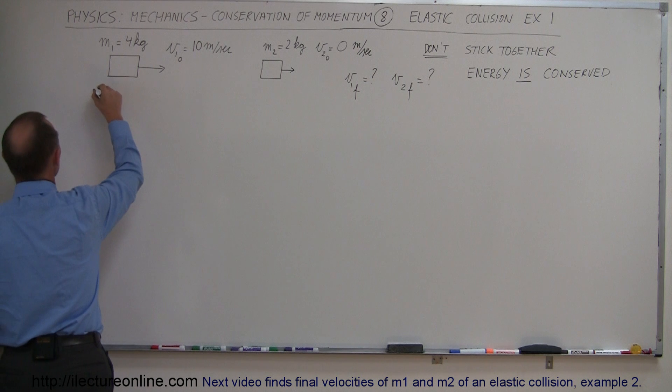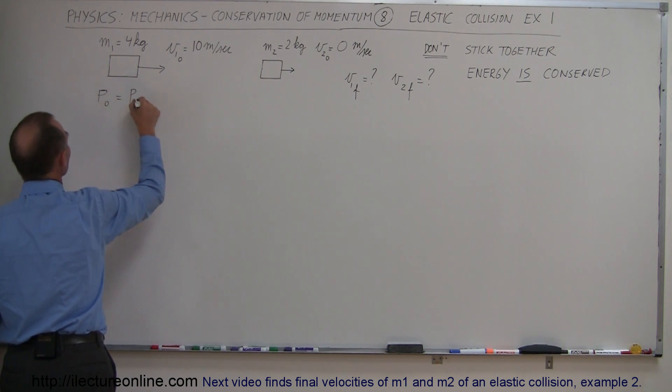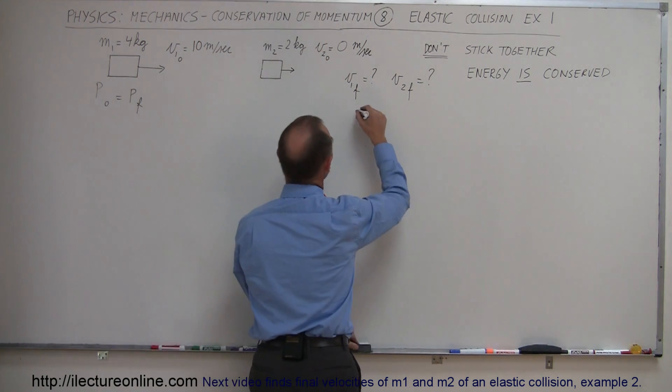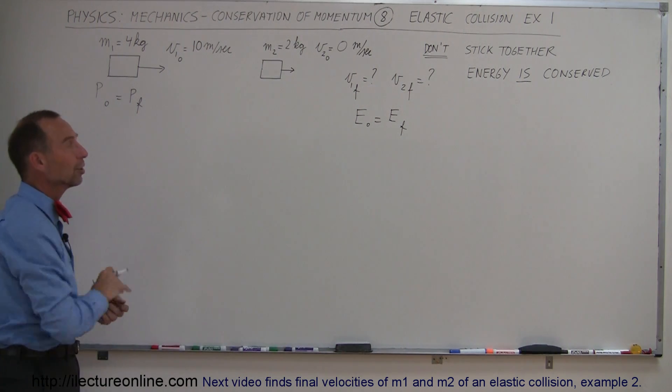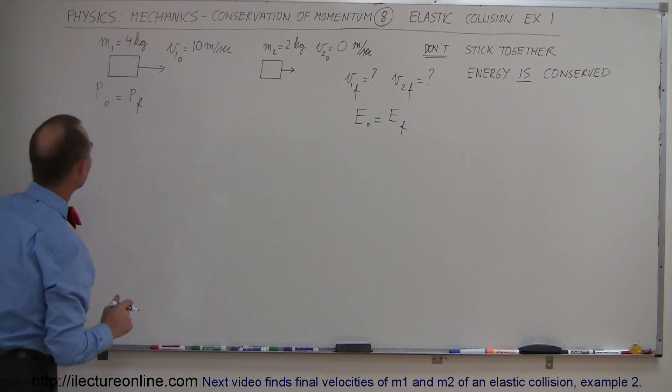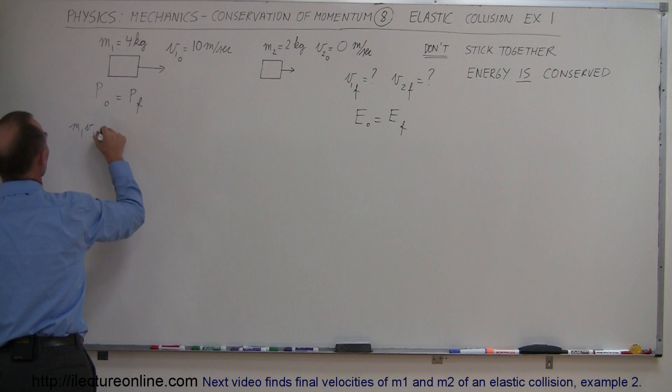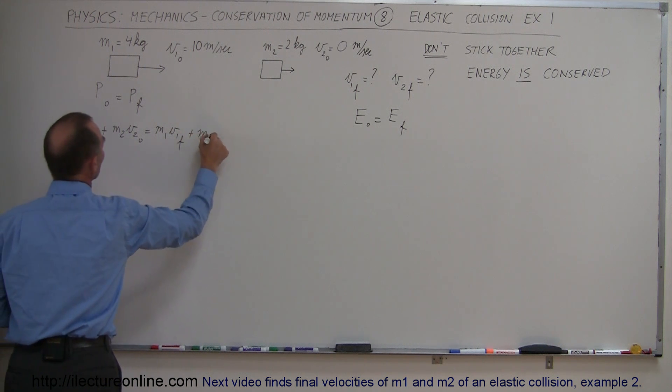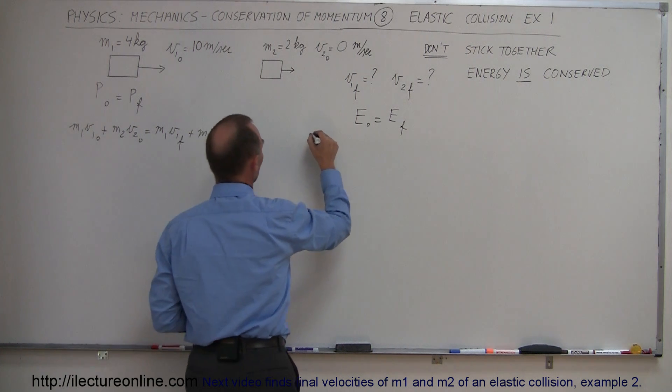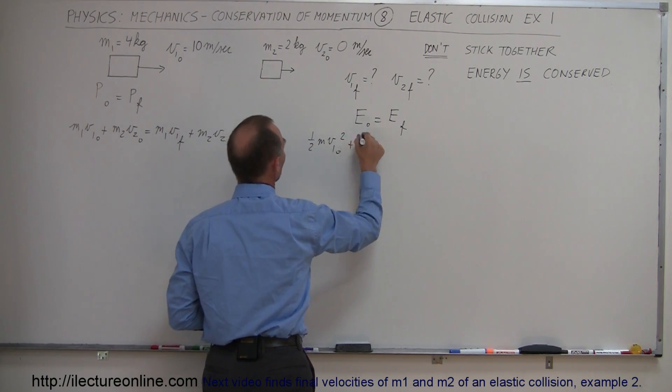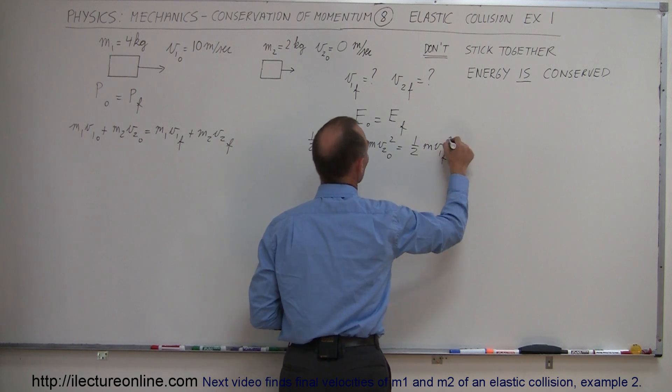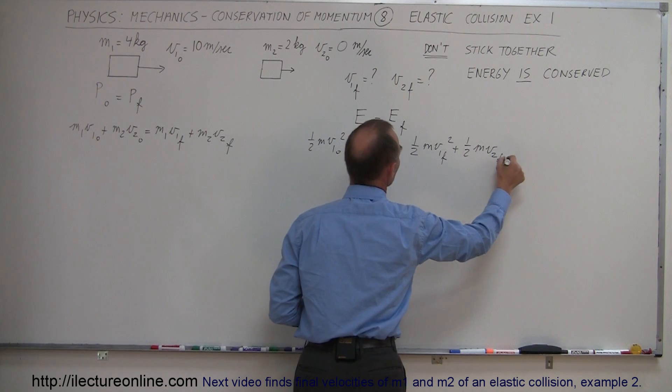We need a second equation, which can be gotten by also considering that energy is conserved. So we have one equation where we say that momentum initial equals momentum final. And we can also write that energy initial equals energy final. This should give us two equations to solve for both unknowns, V1 final and V2 final. This will be written as M1V1 initial plus M2V2 initial equals M1V1 final plus M2V2 final. And over here we're going to write that one half M1V1 initial squared plus M1V2 initial squared equals M1V1 final squared plus M1V2 final squared.